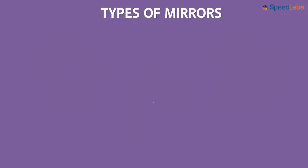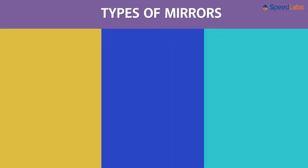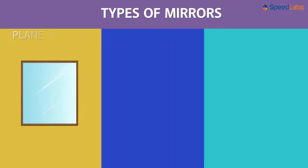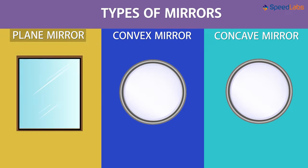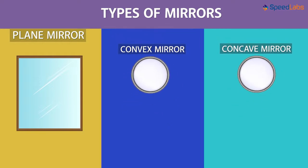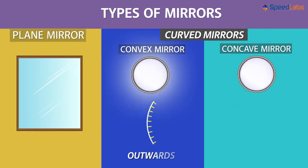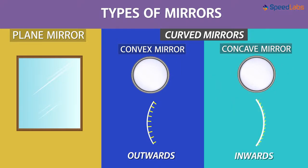Do you know that there are types of mirrors? We talk about basically three types of mirrors: plane mirror, convex mirror, and concave mirror. A plane mirror is pretty obvious — it forms a single plane. Convex and concave mirrors, on the other hand, are curved mirrors. Convex mirror is curved outwards, while the concave mirror is curved inwards.